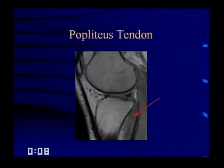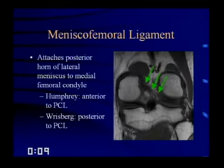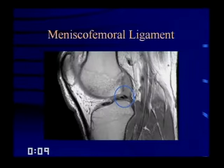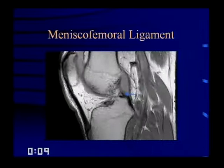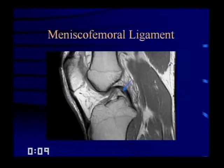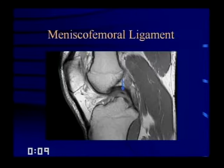Meniscofemoral ligaments attach to the posterior horn of the lateral meniscus and extend up to the medial femoral condyle. There are two: the ligament of Humphrey, if anterior to the PCL, and the ligament of Wrisberg, if posterior to the PCL. The takeoff of this ligament from the posterior horn of the lateral meniscus can mimic a tear. Following it, you see it's really just the takeoff of that ligament — this must be Humphrey since it's anterior to the PCL — and you can follow it all the way up to the medial femoral condyle.